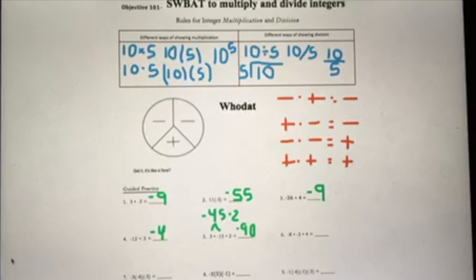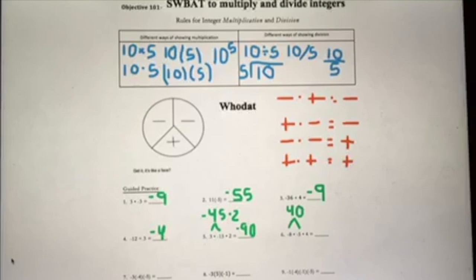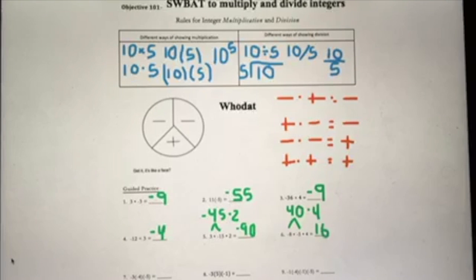Similar steps for number six: negative 8 times negative 5 times 4. Focus on the first part — negative 8 times negative 5. Do 8 times 5, which is 40, and since it's a negative times a negative, that's going to be a positive, so just leave it as 40. Now 40 times 4 is 160, and that's the final answer for number six.